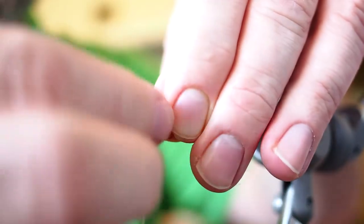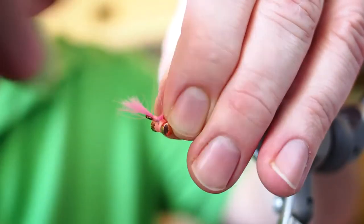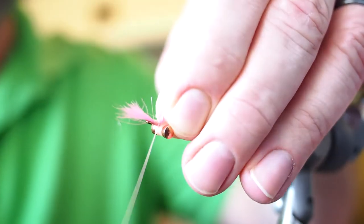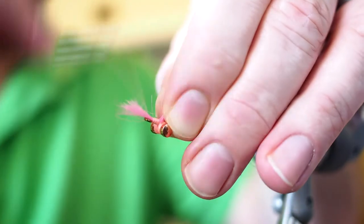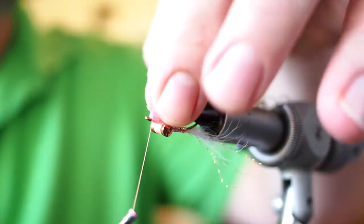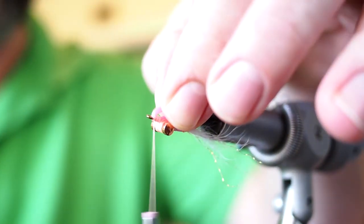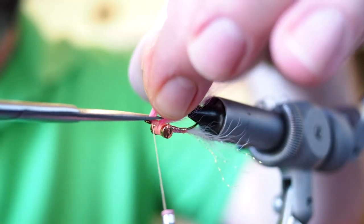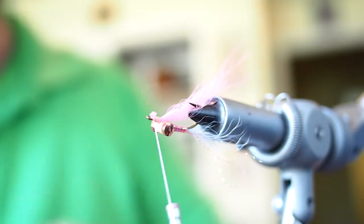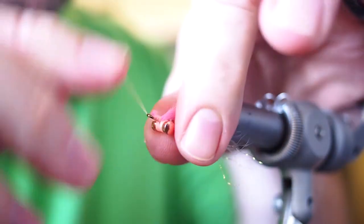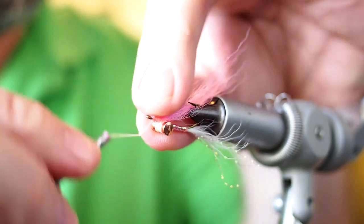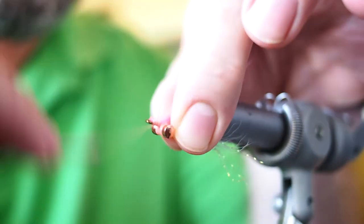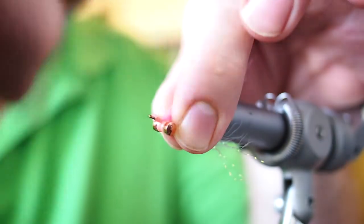Then tighten your thread wraps, advance forward. I usually advance back one more time all the while lifting the wing. Then advance one more time forward, lift this little tag end up, give a couple wraps in front of it and that will make it stand up real nice. Then I can trim it with my scissors, get a nice close trim, and then wrap that tag piece and build a nice head.